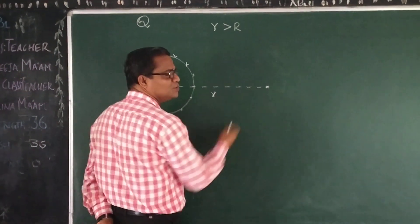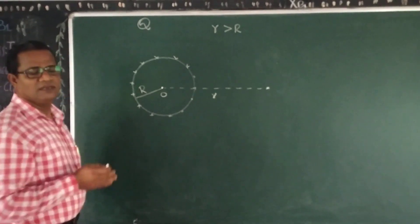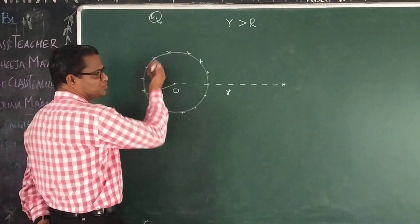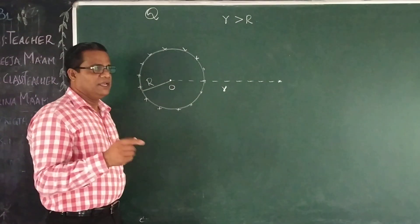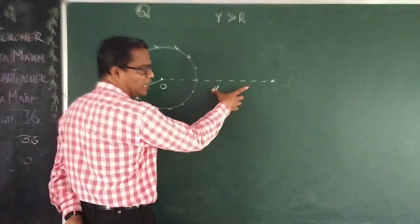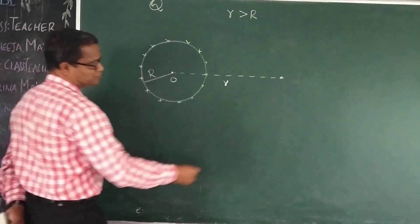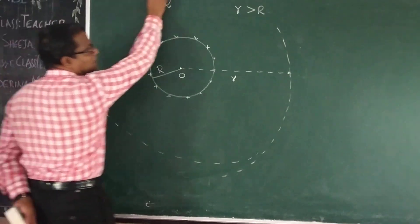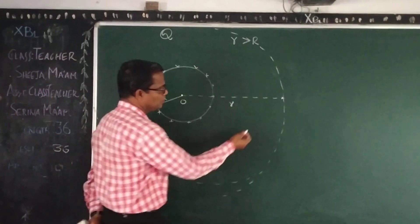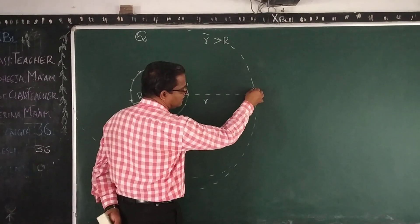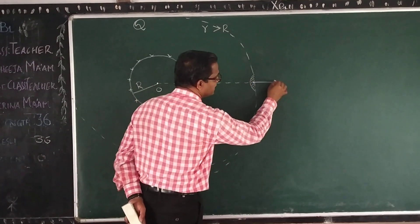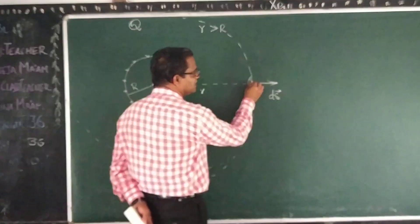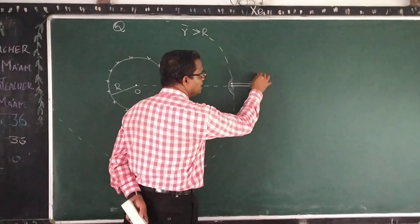Now, the electric field at this point is to be determined using Gauss's theorem. For that we have to consider a Gaussian surface. Taking the symmetry about the charge distribution, we get the Gaussian surface as a sphere of radius small r which encloses the spherical charge distribution. I consider a very small surface area element ds with the area vector outward. The electric field at this point due to the charge distribution is E, which is normally outward.